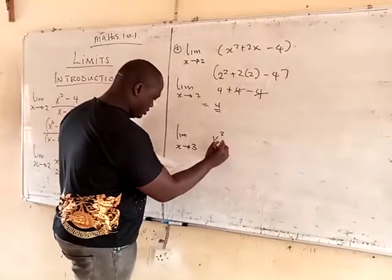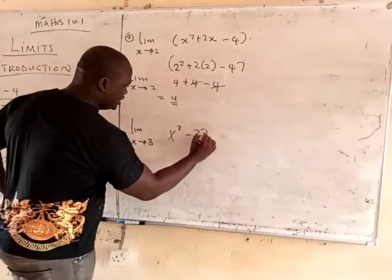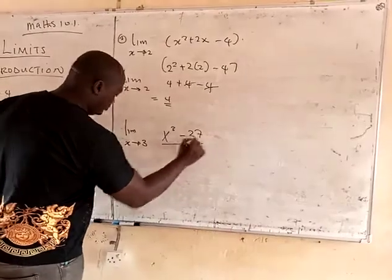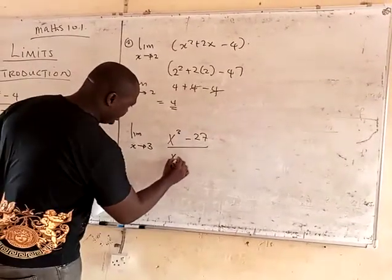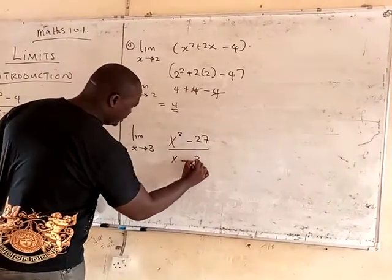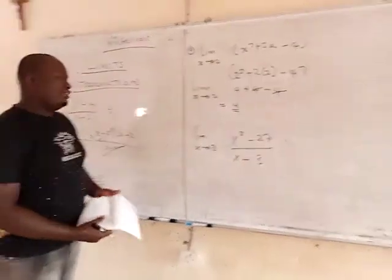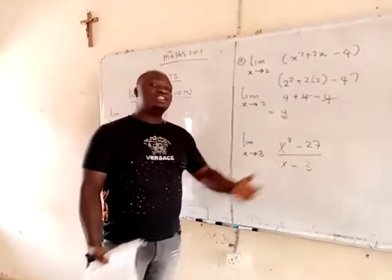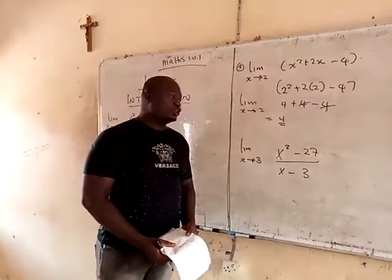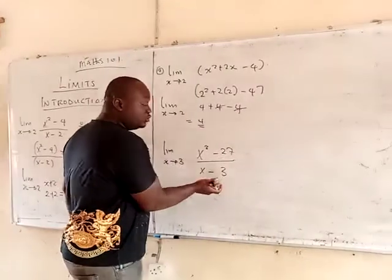You have s cubed minus 27, all over x minus 3. From here, are you going to use direct substitution? No, you can't use direct substitution.